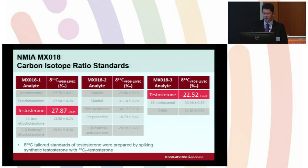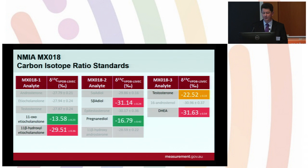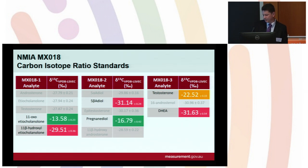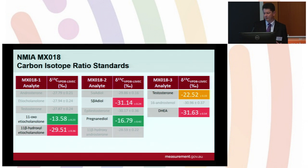We achieved different delta values by producing in-house a tailored testosterone for the third ampule, produced by spiking a synthetic testosterone with a carbon-labeled version. Within each ampule, there is at least one component at the upper end of the VPDB scale that a typical WADA laboratory would see in samples and another at the lower end. This allows WADA laboratories to calibrate their instrumentation with analytes spanning the entire range they would see in typical samples.